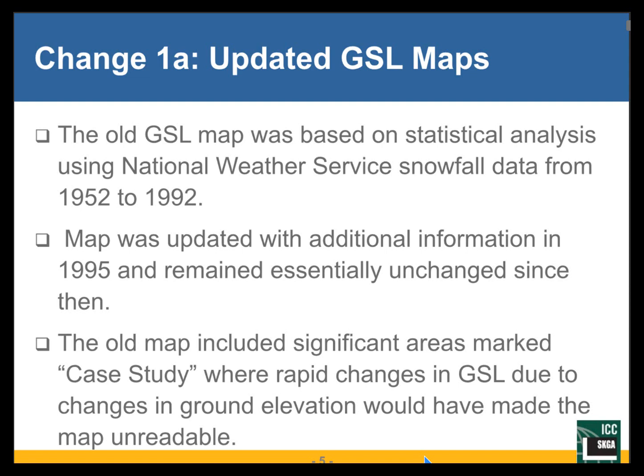The original ground snow load map was based on statistical analysis using National Weather Service snowfall data from 1952 to 1992, which means it was quite old. It was updated with additional information in 1995 — and that was the last time it was updated. 1995 is 28 years ago, and the maps updated in 1995 remained essentially unchanged since that time.